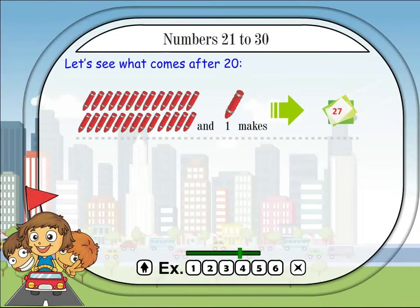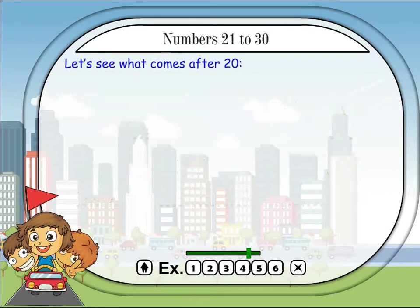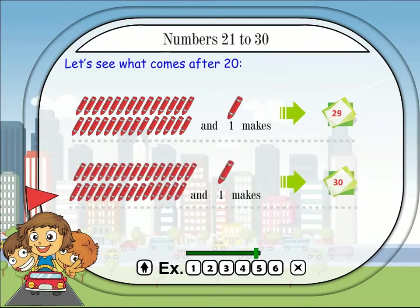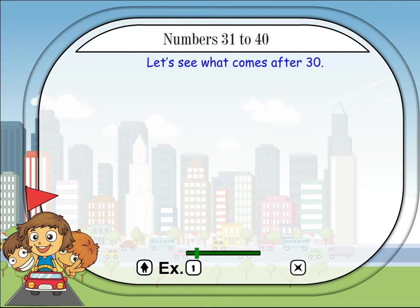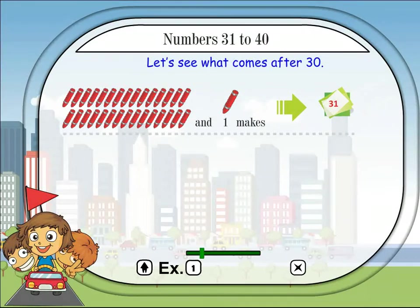Twenty-six and one makes twenty-seven. Twenty-seven and one makes twenty-eight. Twenty-eight and one makes twenty-nine. Twenty-nine and one makes thirty.